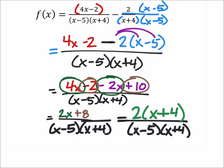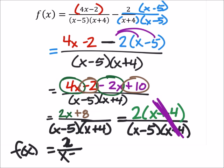Alright, so now this part will affect the denominator. Because this x plus 4 is going to cancel out that x plus 4. The green and the black there. Which leaves us with f of x equals 2 over x minus 5.